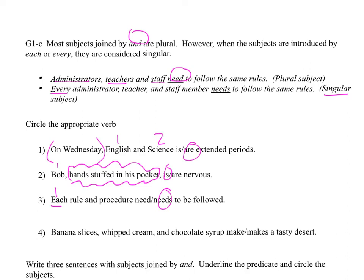Finally, number four. Banana slices, whipped cream, and chocolate syrup — make or makes a tasty dessert. Now, here we have three different subjects. But this one is tricky because these three combined make one dessert. I'm going to circle the verb for singular: makes. Because we can treat these three subjects as really one dessert.